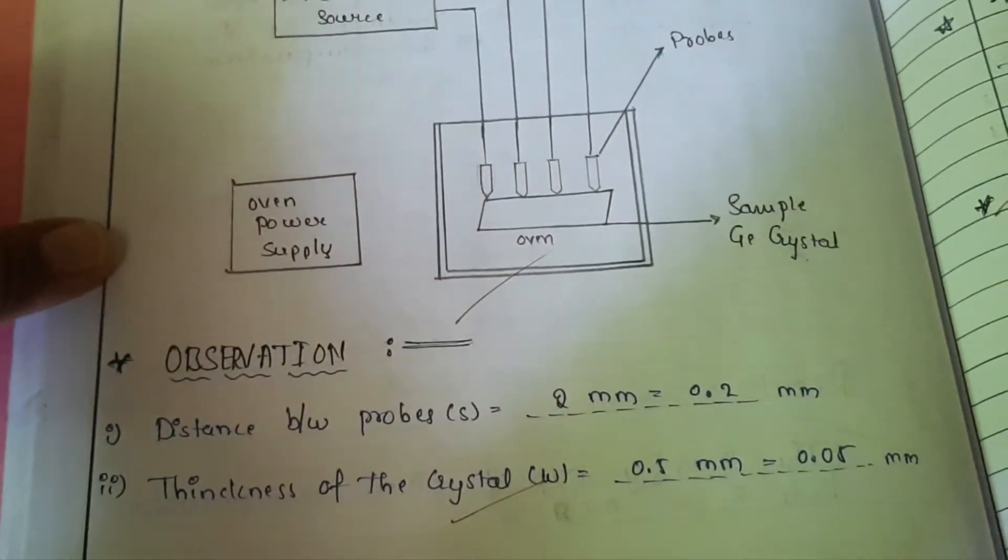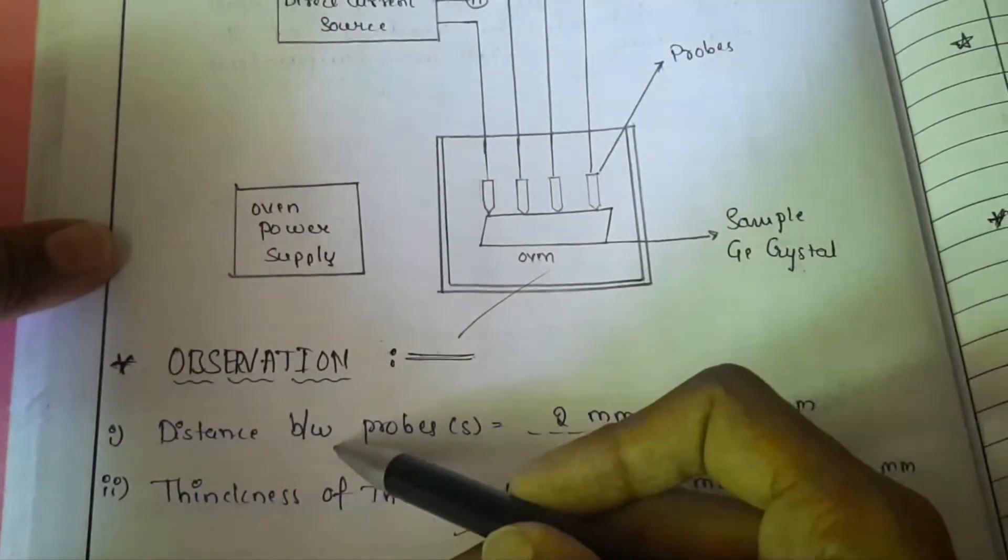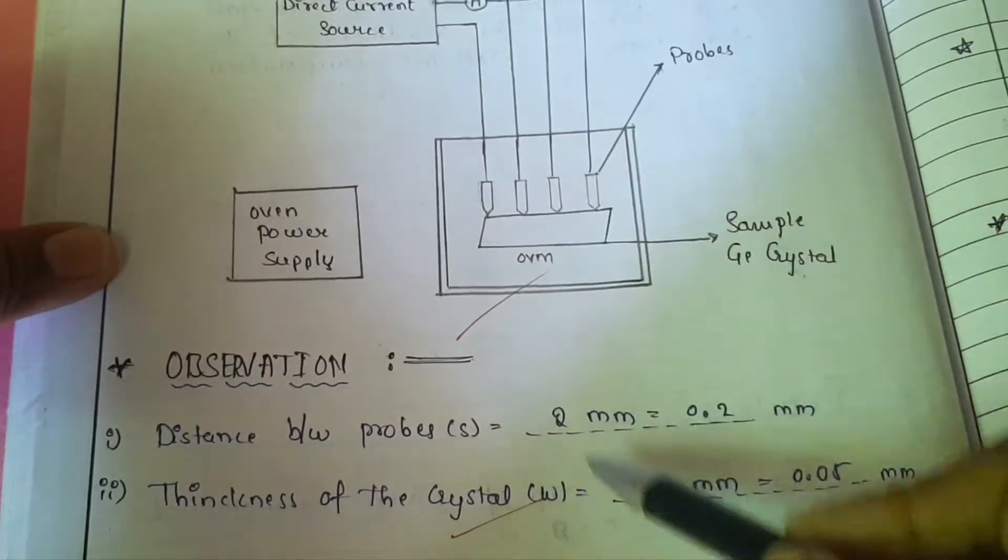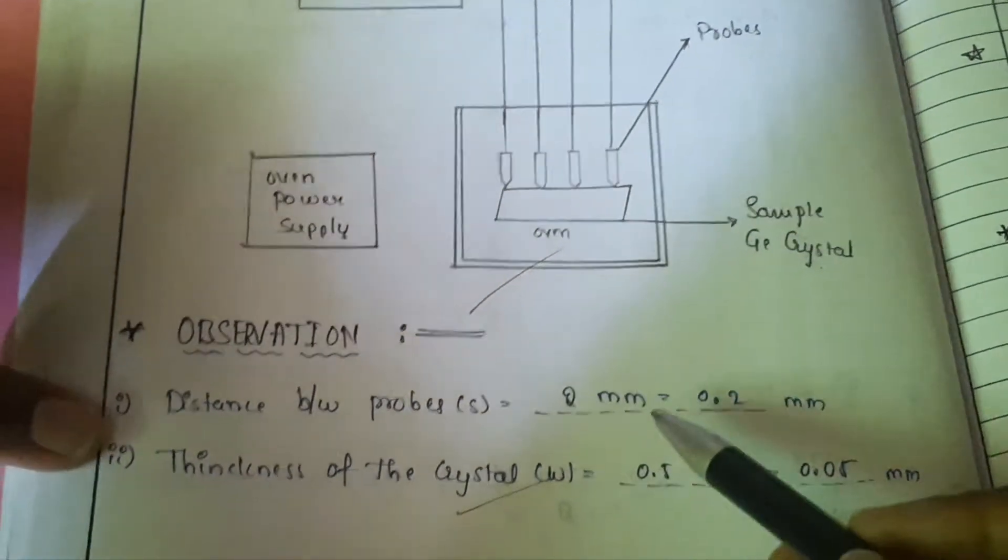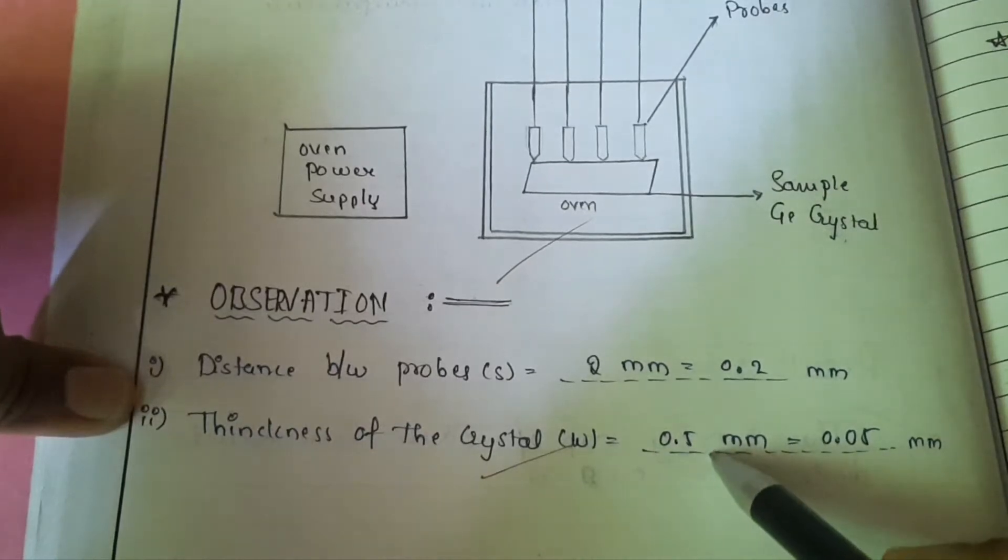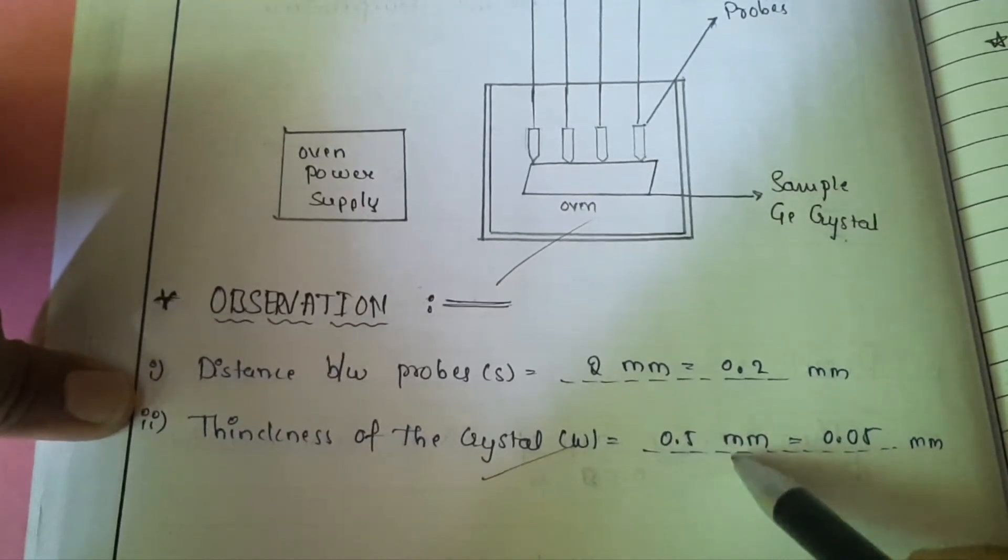Observation also you should note on. Here you should note on the distance between the probes, that is 2 mm, and thickness of the crystal they have given 0.5 mm.